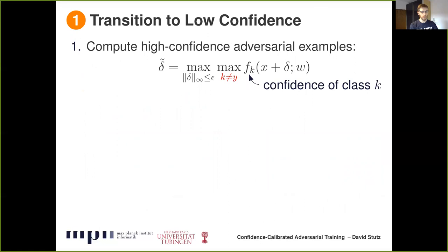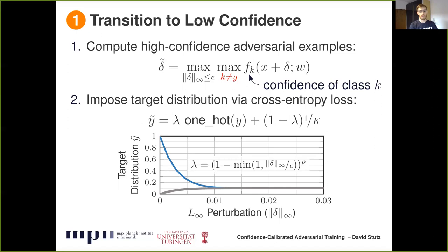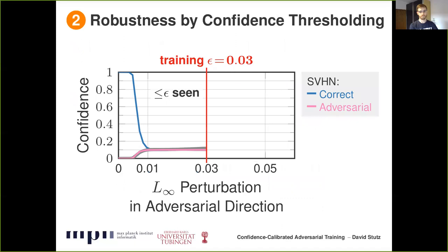For the model to actually assign low confidence to adversarial examples, training works as follows. We train on both clean and adversarial examples. The adversarial examples are obtained by explicitly maximizing the confidence in any class but the true label — marked in red — where F sub K denotes the predicted confidence in class K, and we take the maximum over all classes except the true class. Using these adversarial examples, we compute a new target distribution as a convex combination of a one-hot distribution and a uniform distribution, modeling how the model should transition between high and low confidence. The transition follows a power function, happening very quickly and close to the clean training example, so that an entirely uniform distribution is used at the border of the epsilon ball. This deep transition biases the network towards extrapolating uniform predictions beyond the epsilon ball.